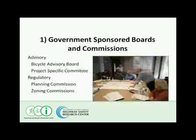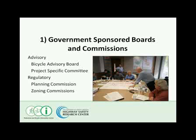Government-sponsored boards and commissions come in two basic types: advisory, like a bicycle or pedestrian advisory board or a project-specific committee — for example, when Seattle did its bicycle master plan, we formed a citizens committee that started and ended with that project. Then there are regulatory boards and commissions such as a planning commission or zoning commission, which have actual regulatory authority. What they decide happens.